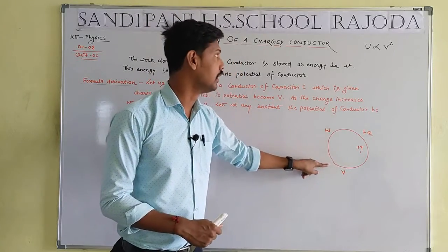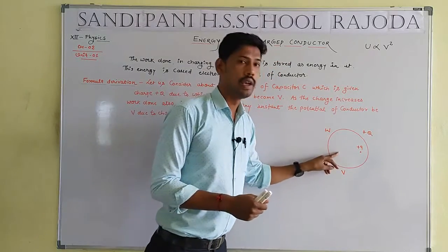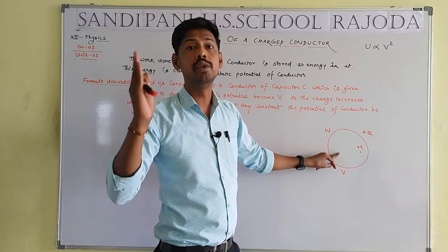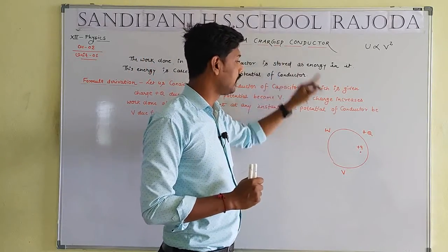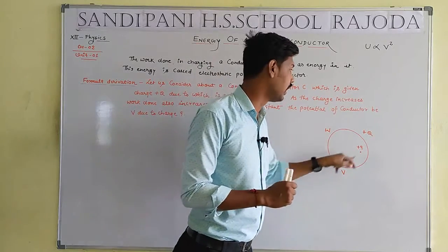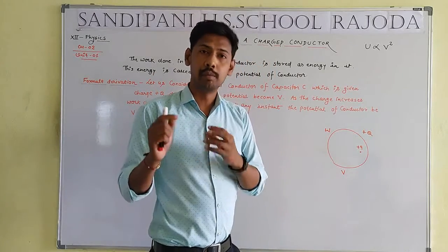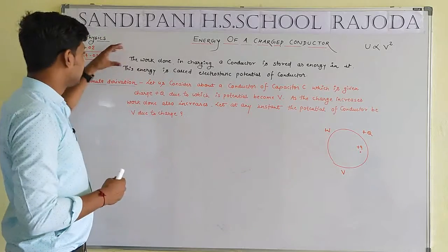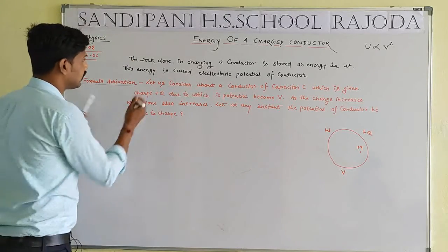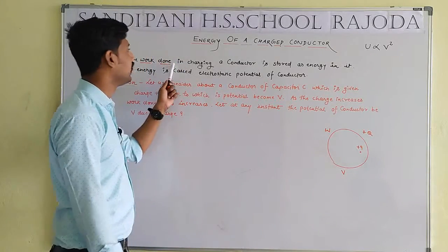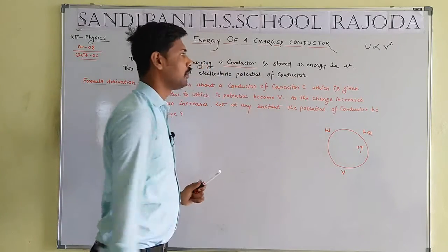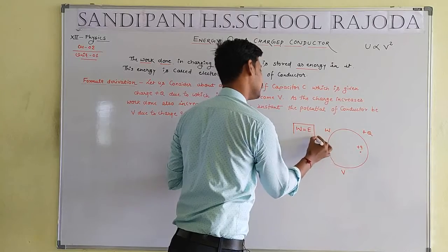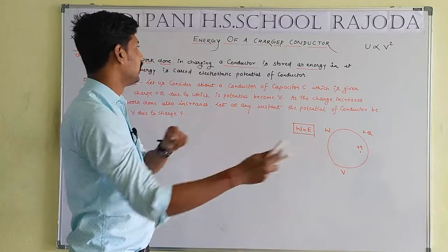Let us consider any charged conductor. Total work done will be equal to W, potential will be equal to V, and total charge will be equal to Q. Let us consider observation point P which has a test charge equal to plus Q. We start with the principle: the work done in charging a conductor is stored in the form of energy.